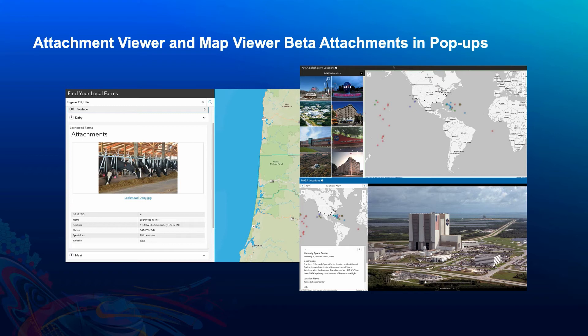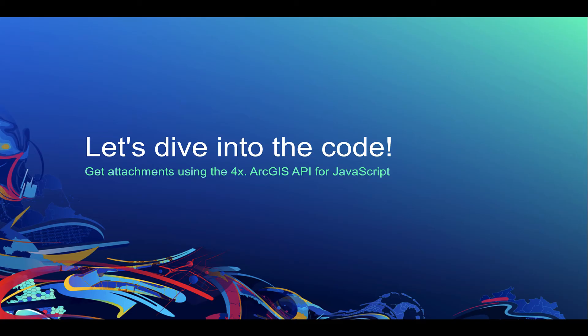So we have now seen how the attachment viewer can use two different layouts to present attachments in a feature layer, and we've also taken a look at using the map viewer to configure popups that showcase attachments in a feature layer. I am now going to pass the mic over to Ryan so that he can cover using the ArcGIS REST API and JavaScript API to work with attachments in a feature service. Thanks, Sarah. I'll be covering how to use the ArcGIS REST API and the 4X ArcGIS API for JavaScript to get attachment data and use in your web application.